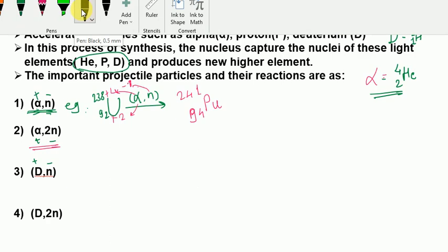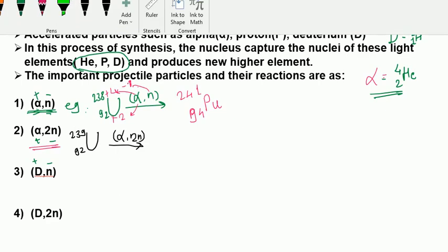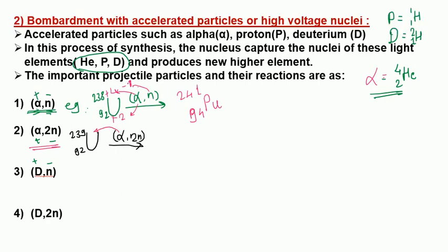Example of α,2n reaction: uranium-239 (atomic number 92) bombarded with one alpha particle while two neutrons are lost. Mass number increases by 4 from alpha minus 2 from neutrons, giving a net increase of 2. Atomic number increases by 2 from alpha. The new species formed has atomic number 94 and mass number 241 — again plutonium-241.